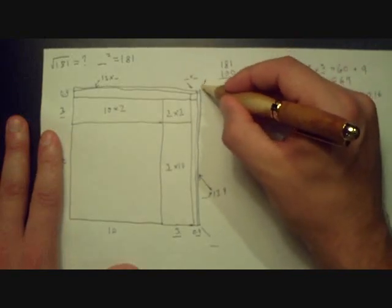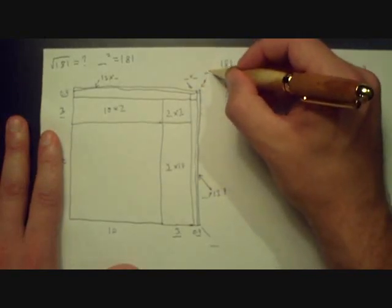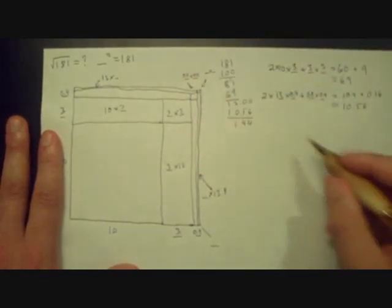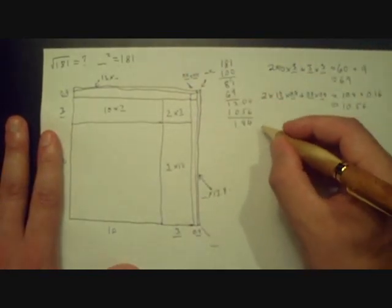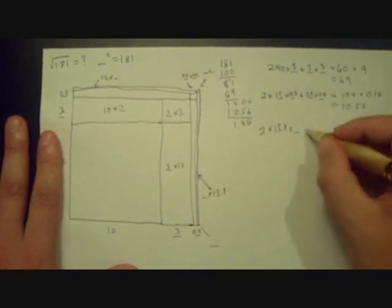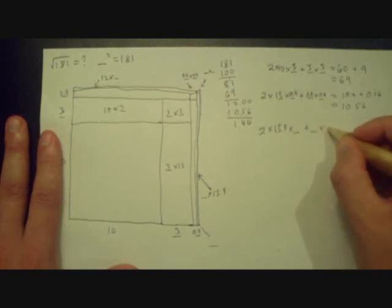And then, I've got the square in the corner, which is still going to be blank times blank. And so, I'm going to put that. That's what I had last time. And so, here, I'm going to rewrite it. And so, this becomes 2 times 13.4 times blank plus blank times blank.